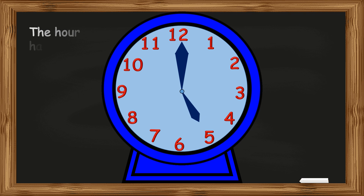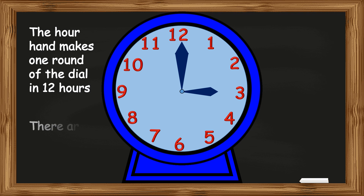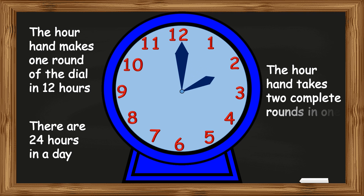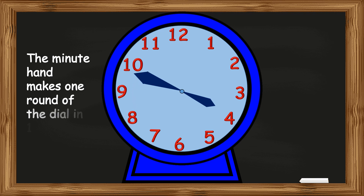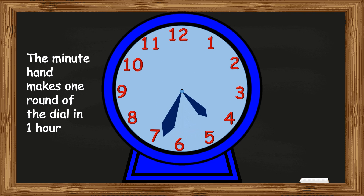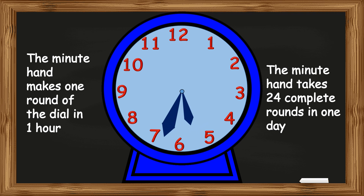The long hand tells the minutes, so it is called the minute hand. Some clocks also have a thin hand which tells the seconds. The hour hand makes one round of the dial in 12 hours, but there are 24 hours in a day. So the hour hand takes two complete rounds in one day. The minute hand makes one round of the dial in one hour, and since there are 24 hours in a day, the minute hand takes 24 complete rounds in one day.